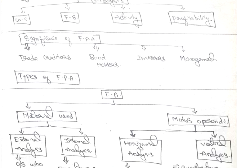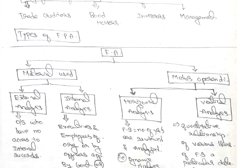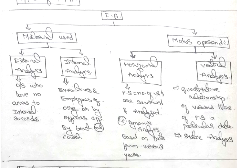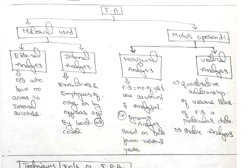Types of financial performance analysis. Financial analysis can be divided into two: material use and modus operandi. Material use can be divided into two, external analysis and internal analysis. External analysis by those outside who have no access to internal records. Internal analysis by those who are executives and employees of organization or by officers appointed by government or court.